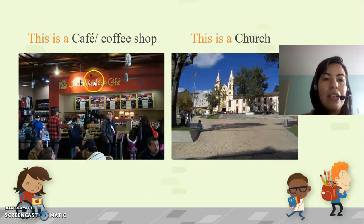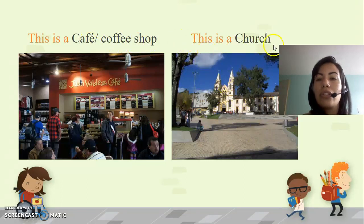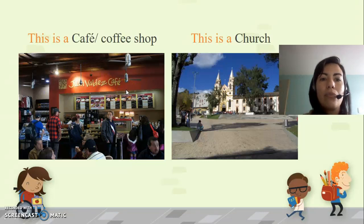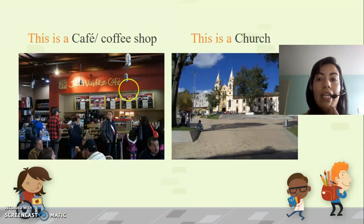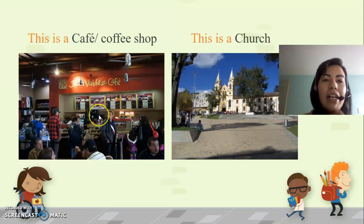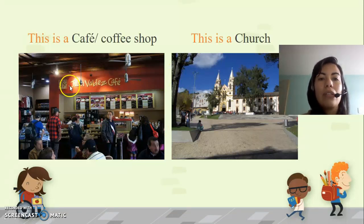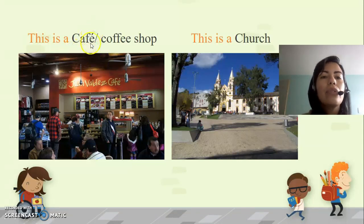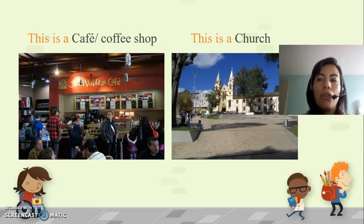What is this? This is a café, or a coffee shop. What is this? This is a church. Here we can see Juan Valdez Café, one of the most famous enterprises in Colombia with coffee. And here we have a church located in Suba downtown. We use café in American English and coffee shop in British English, but both of them work.